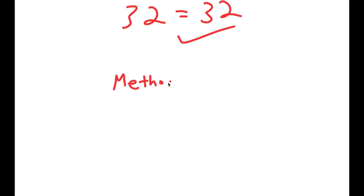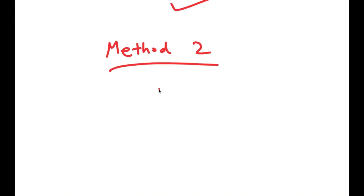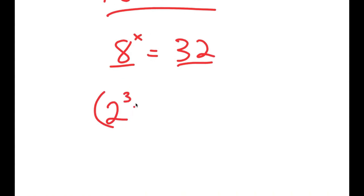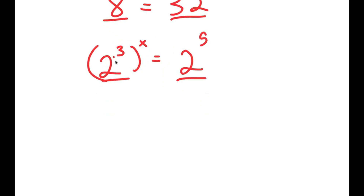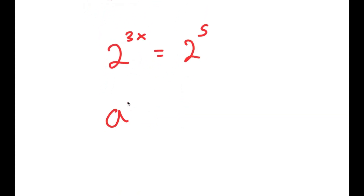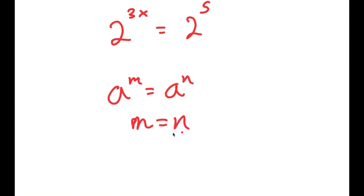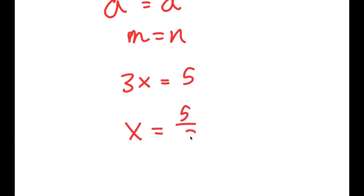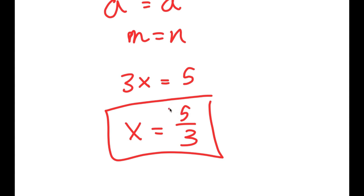I also have a second method of solving this problem. For this method, I rewrite both numbers using the same base. So 8 becomes 2 to the power of 3, and 32 becomes 2 to the power of 5. This gives 2 to the power of 3 to the power of x, which equals 2 to the power of 3x, and this equals 2 to the power of 5. Because both sides have the same base, the exponents must be equal: 3x equals 5, so x equals 5 over 3. That's another method of solving this equation.